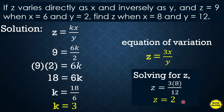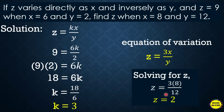For this type of problem, first find the constant of variation, then write the equation of variation. After that, substitute the new values to find the unknown. That is the process for solving combined variation problems.